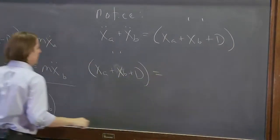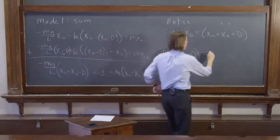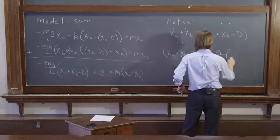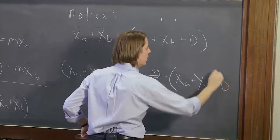Equals minus g over L times the coordinate, minus g over L xA plus xB minus d.